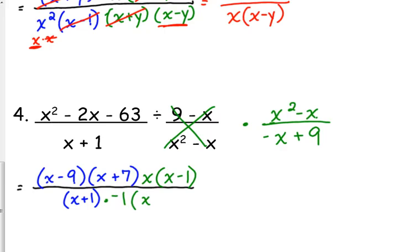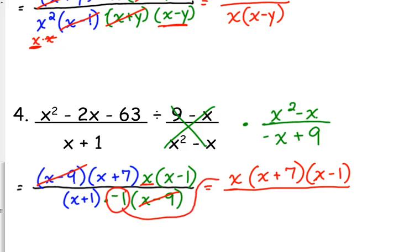The denominator has a GCF of negative 1. We want to take out that negative from the x. If we take out a negative 1, that becomes x minus 9. So we can factor out an x minus 9. In the numerator, put that x in the front: x times x plus 7 times x minus 1. We don't leave negatives in the denominator, so I'm going to make that a negative x in the numerator. And then we've got x plus 1 in the denominator. And that's it.